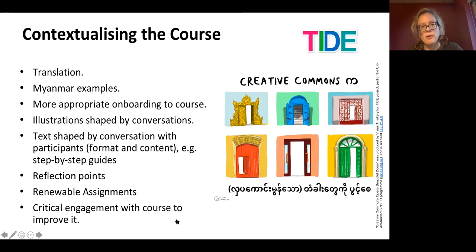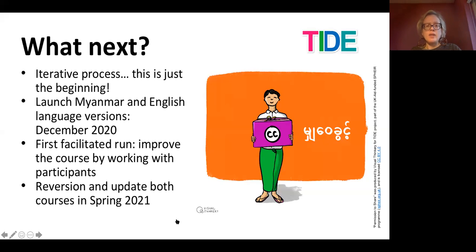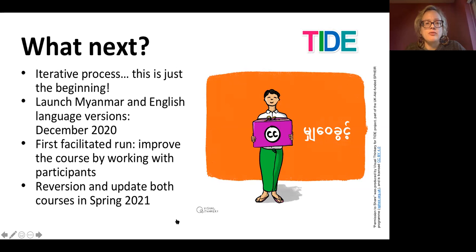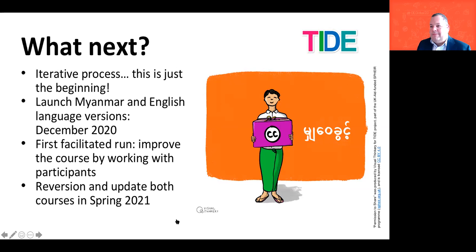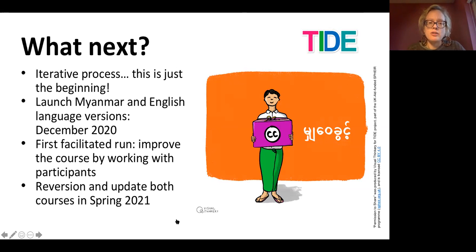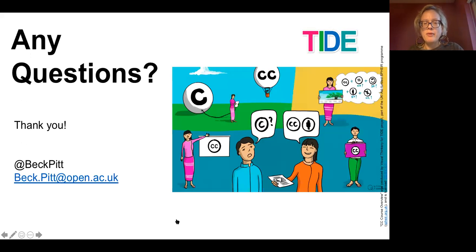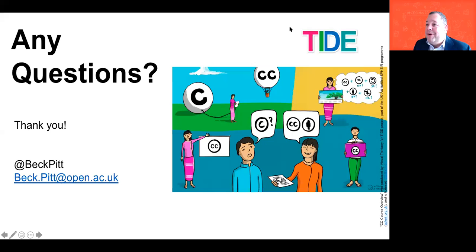There's a lot more work to do and I'm hoping we can continue to work with Myanmar colleagues to make the course even better. In terms of next steps: this is very much an iterative process and we're just really at the start. We're about to launch the Myanmar and English language versions in December, which is when we start the first facilitated run. Then in around March we'll be looking to reversion and update the course again. Thank you very much for your time.